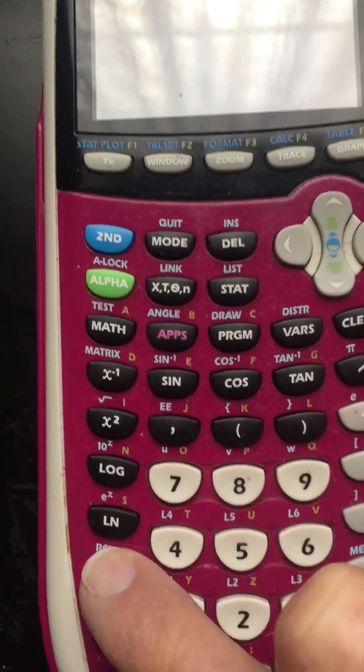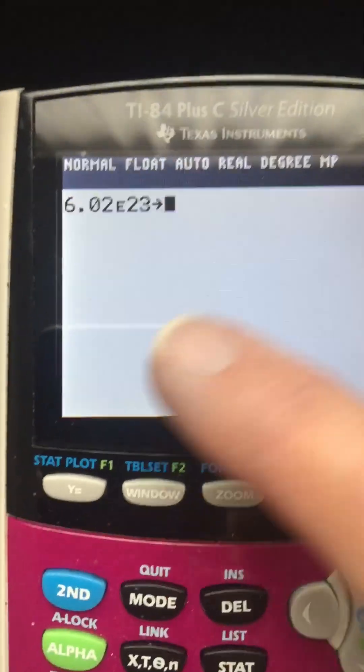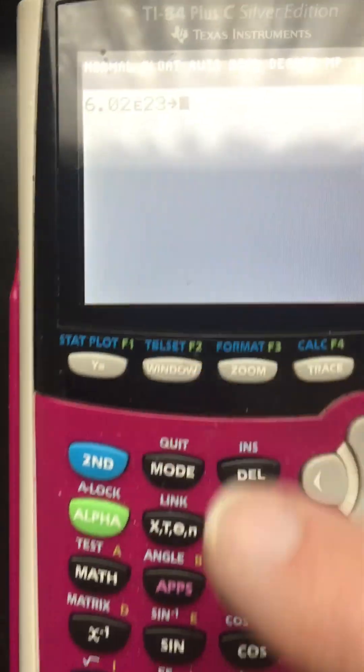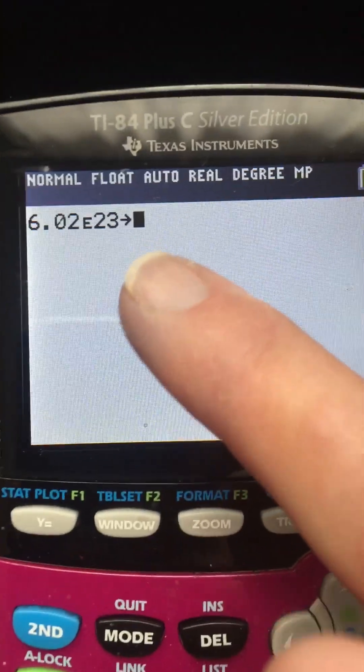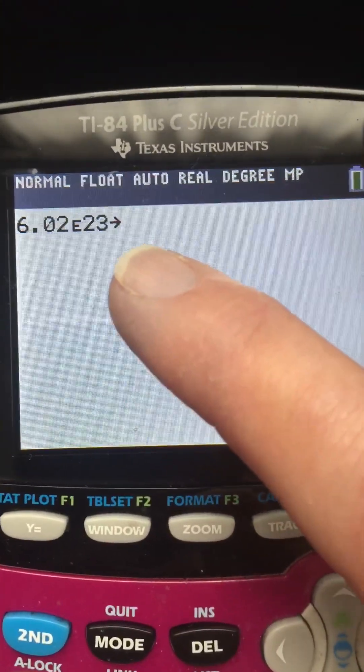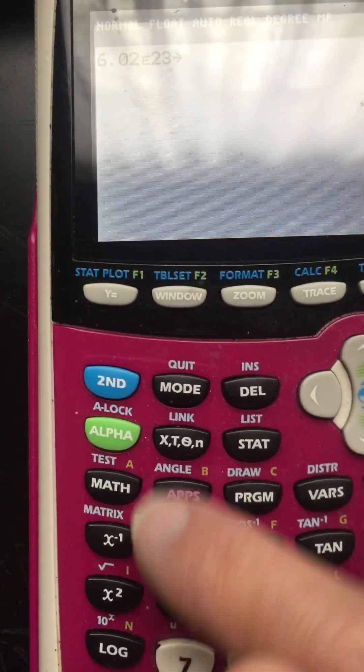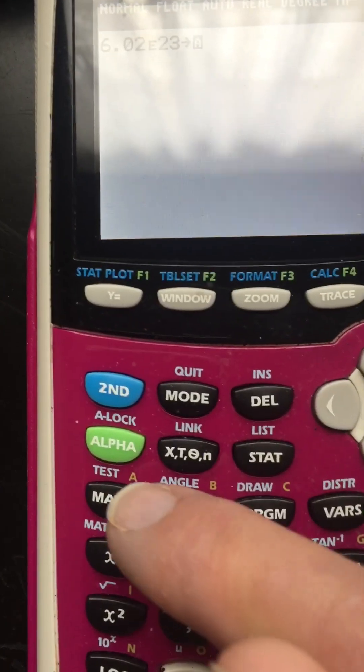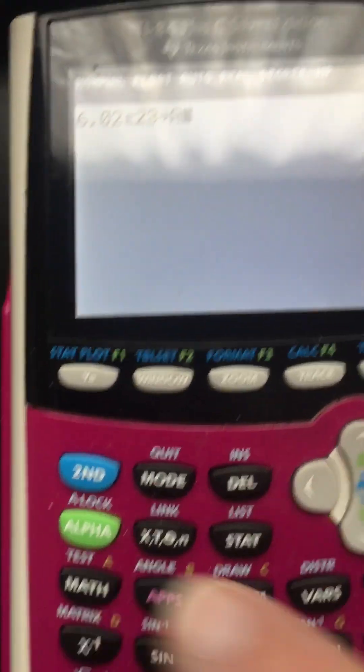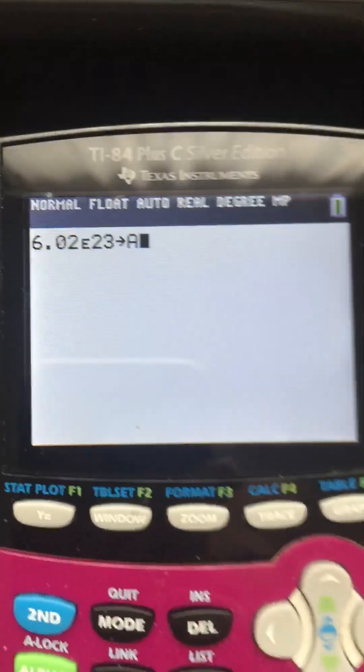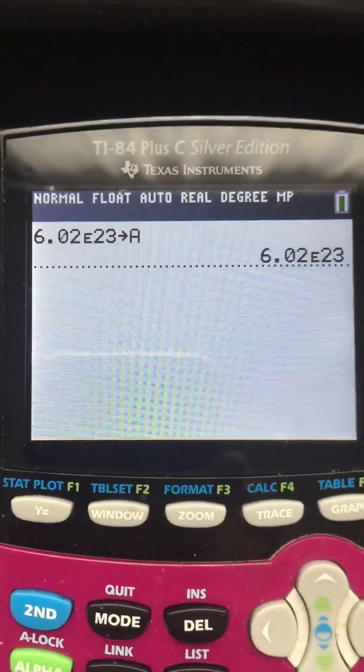Okay, so what I'm gonna do is I'm gonna hit store, and now the arrow says like where do you want to store it. Well, because Avogadro's number starts with the letter A, I'm gonna put it under A. So I'm gonna say alpha, and see how there's an A right there on the math, so I'm saying you're gonna store it in A and I hit enter.